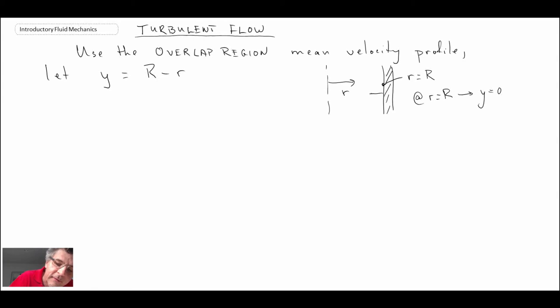Basically what we're doing is we're re-transforming that so that this is kind of like y coming in that way away from the pipe wall which is what it should be for pipe flow.